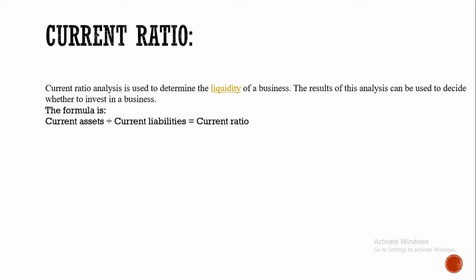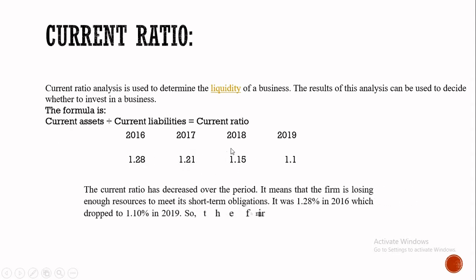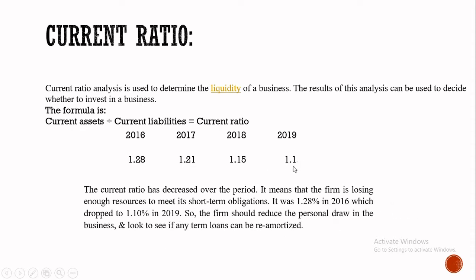The formula of the current ratio is current assets divided by current liabilities. I have calculated the current ratio for four years for a company. The first year is 1.28, the second year is 1.21, the next year is 1.15, and the last year is 1.01.